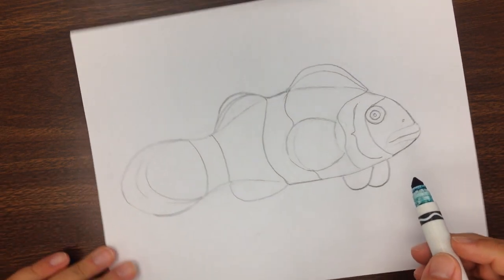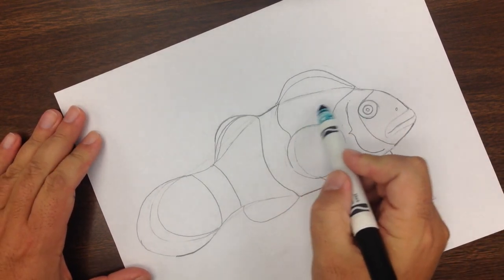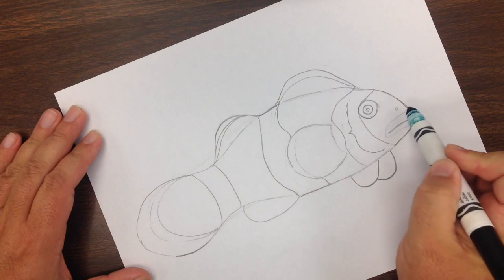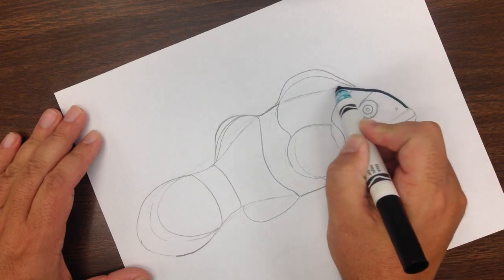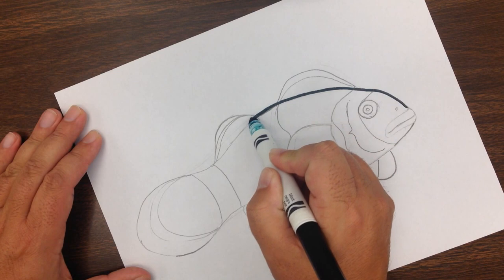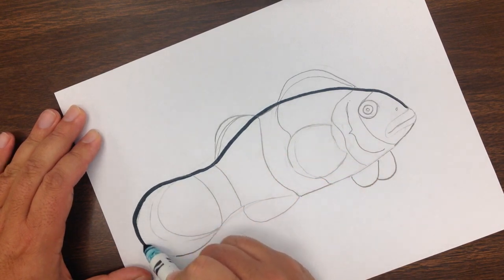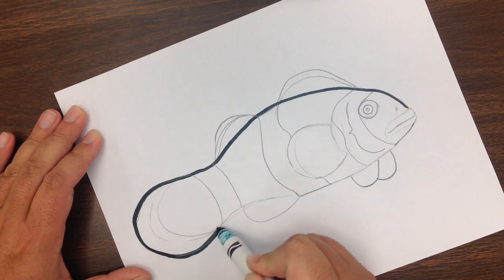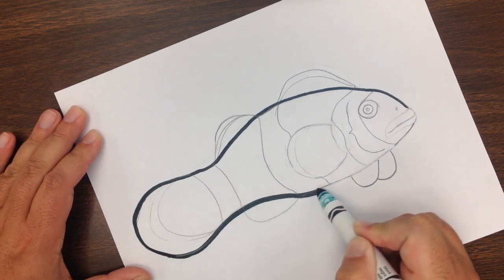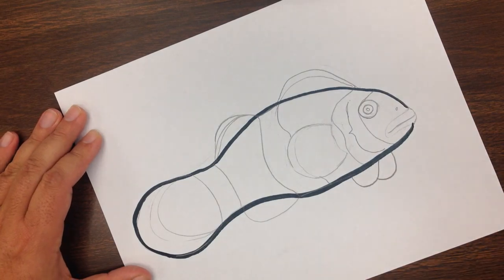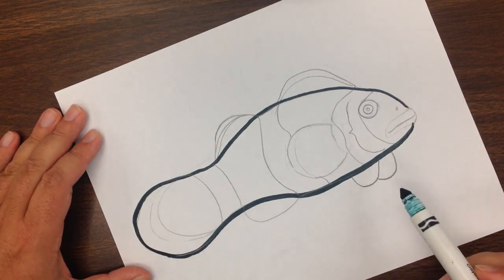I'm just going to take my black marker and starting right about here, I'm just going to go around the outside and then stop right there. So this is the basic outline of the clownfish body. These two oval shapes that I was talking about before.